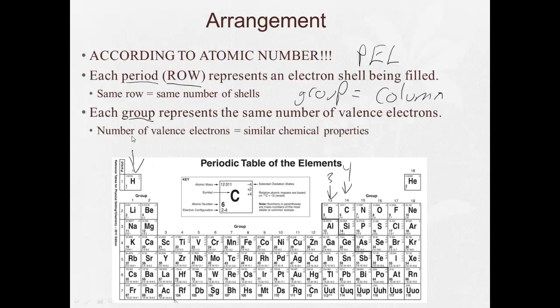Now, the number of valence electrons is what gives elements their chemical properties. So if they have the same number of valence electrons, they're going to have similar chemical properties.